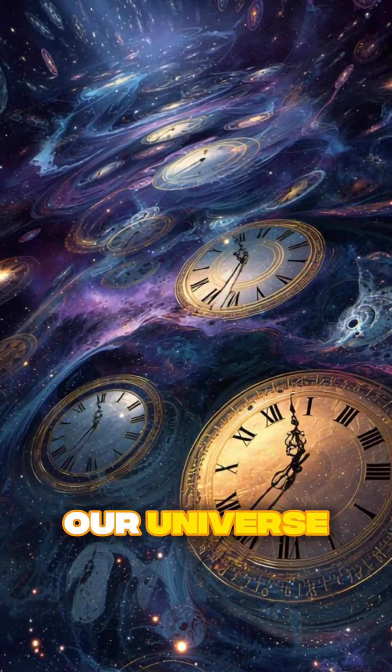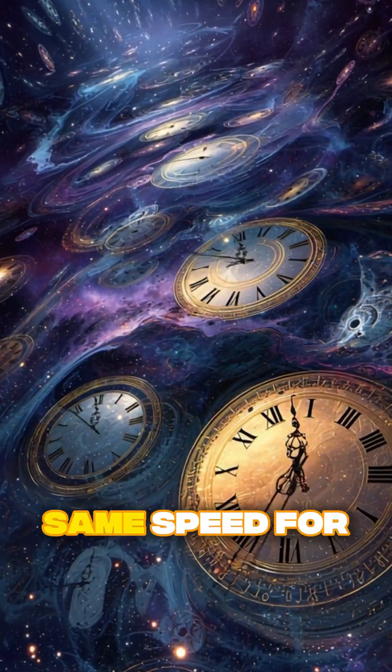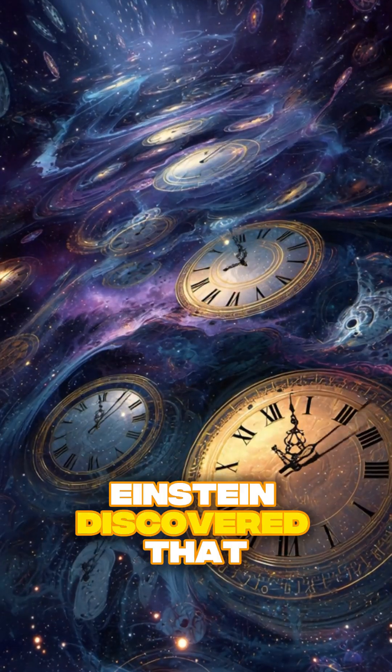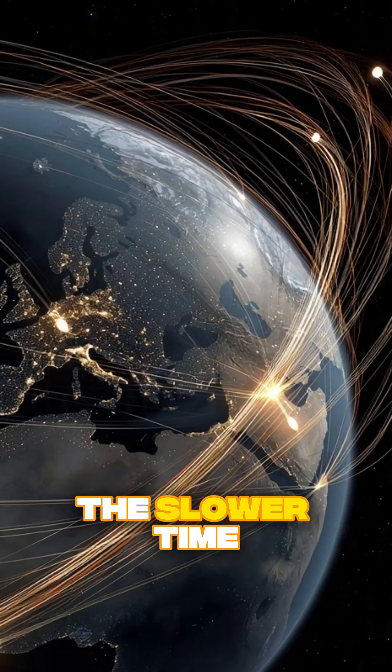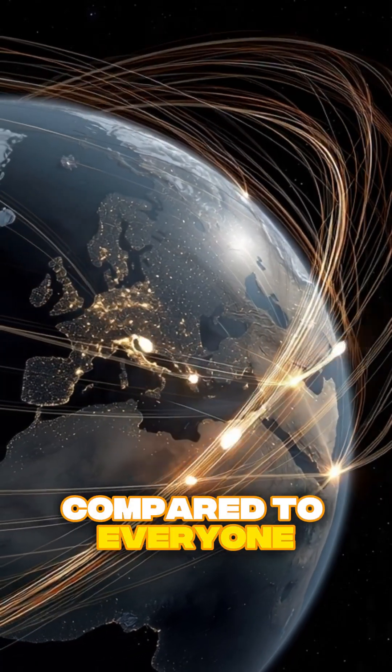Here's a mind-bending truth about our universe. Time does not tick at the same speed for everyone. Einstein discovered that the faster you move, or the stronger the gravity around you, the slower time passes for you compared to everyone else.